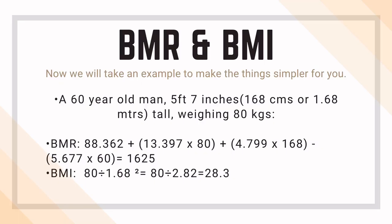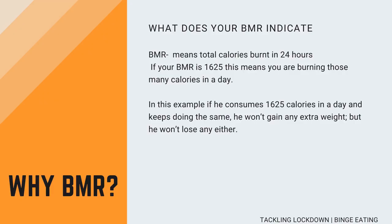Now we'll take an example to make things simpler. A 60-year-old man — let's say he's five feet seven inches tall, which makes it 168 centimeters or 1.68 meters, and he weighs 80 kilograms. If you fill in all the details in the BMR formula, you get a BMR of 1625. If you fill in the details in the BMI formula, you get a BMI of 28.3.